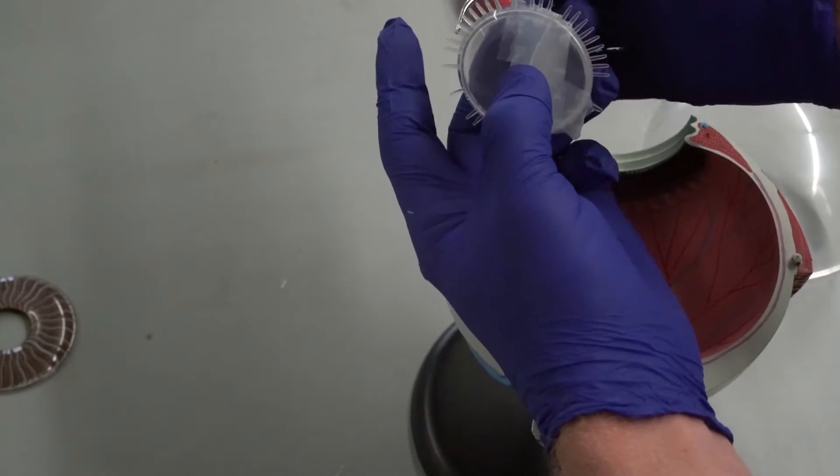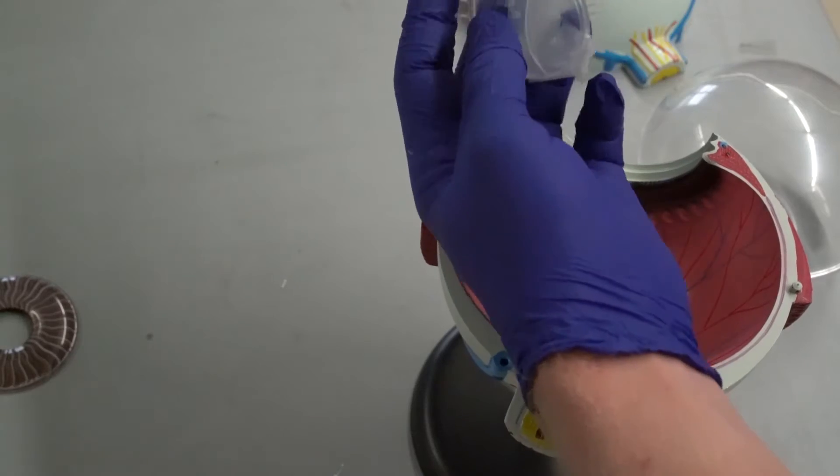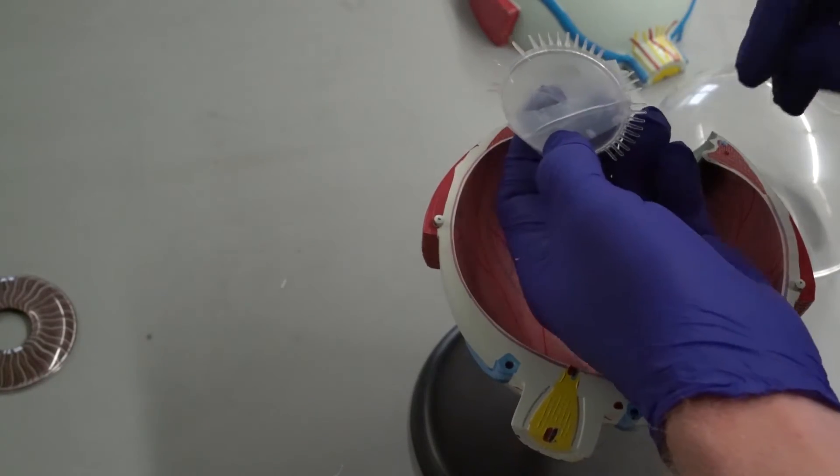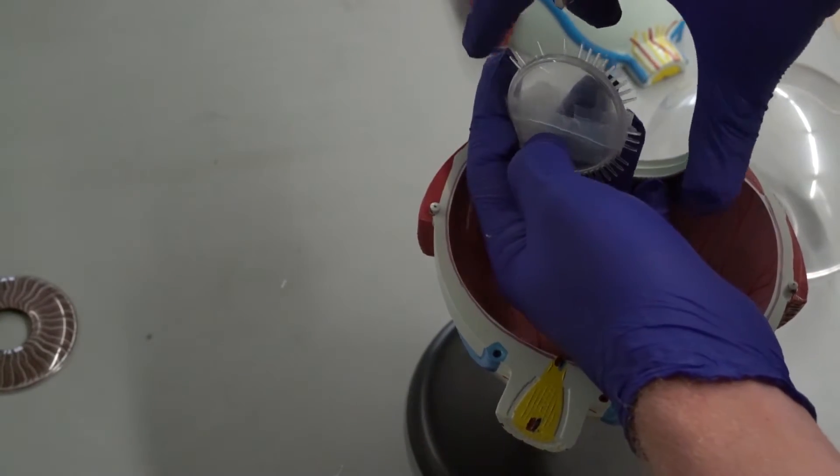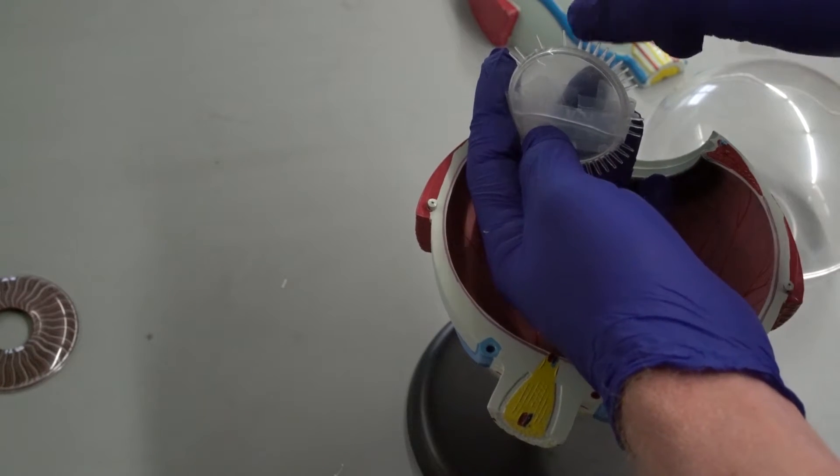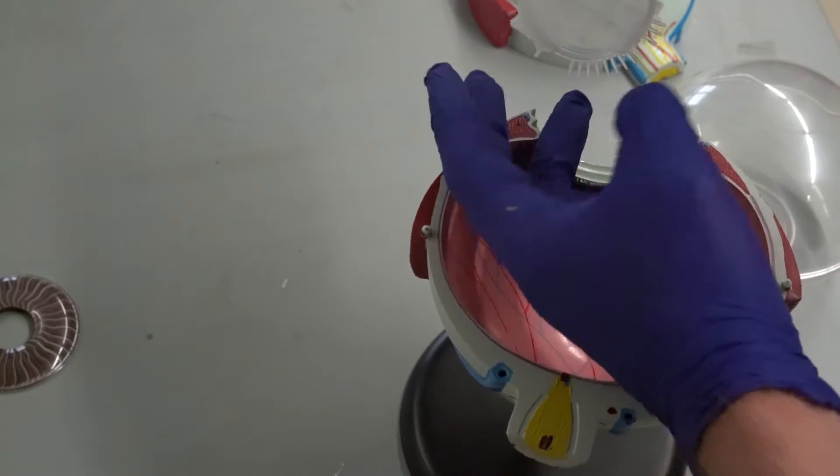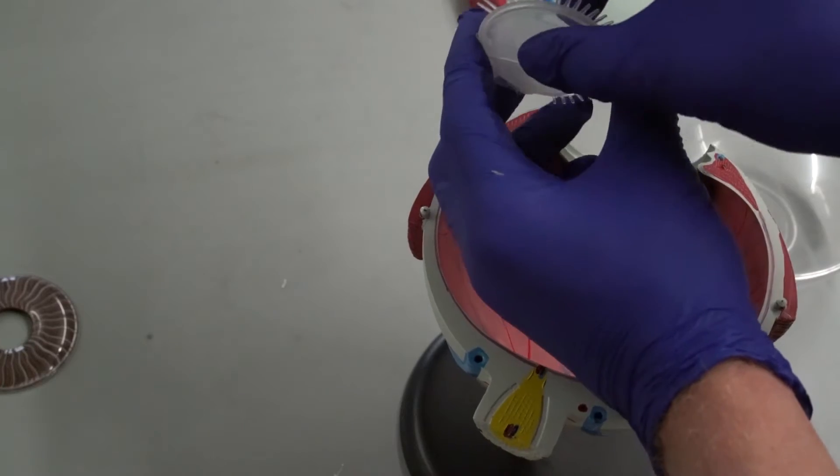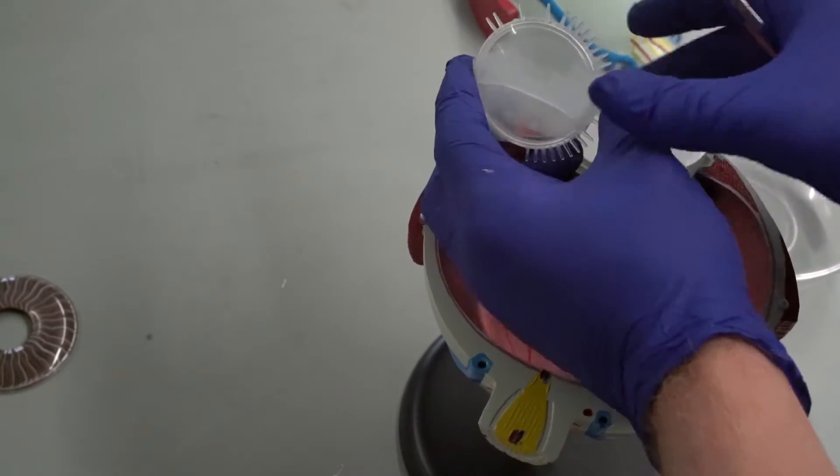These fibers are called your ciliary zonule. In your ciliary zonule, they're attached to your lens. So as the ciliary body changes shape, it'll either pull on the zonules, flattening the lens, or it'll give slack to the zonules, allowing the lens to bulge out and take its natural shape.